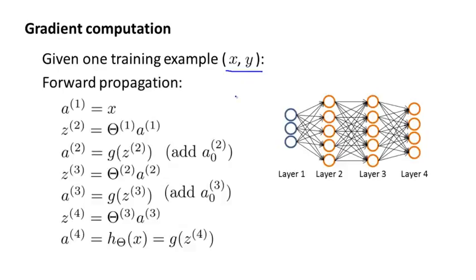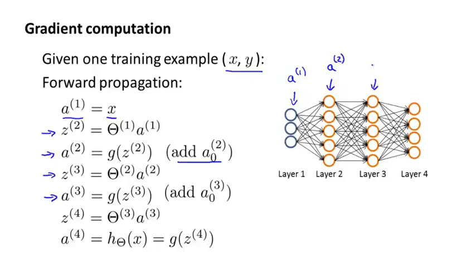The first thing we do is apply forward propagation in order to compute what our hypothesis actually outputs given this input x. Recall that a1 is the activation values of the first layer, the input layer. We set z2 equals theta1 times a1, and a2 equals g, the sigmoid activation function applied to z2. This gives us our activations for the first hidden layer, layer 2 of the network, and we also add the bias terms. Next, we apply two more steps of forward propagation to compute a3 and a4, which is also the output of our hypothesis h of x. This is our vectorized implementation of forward propagation, and it allows us to compute the activation values for all of the neurons in our neural network.